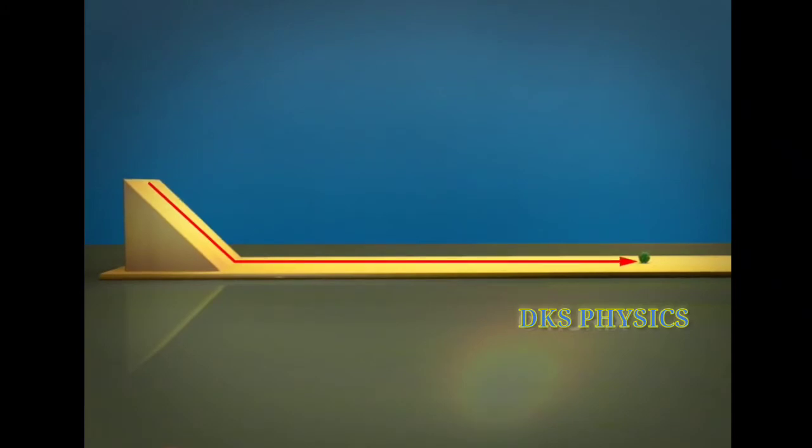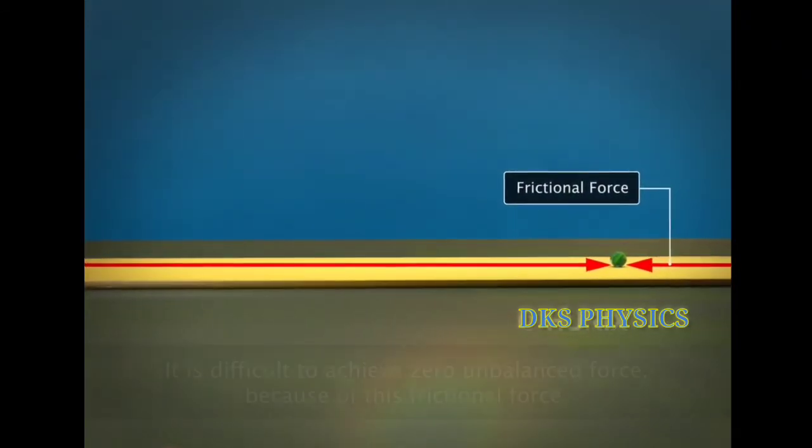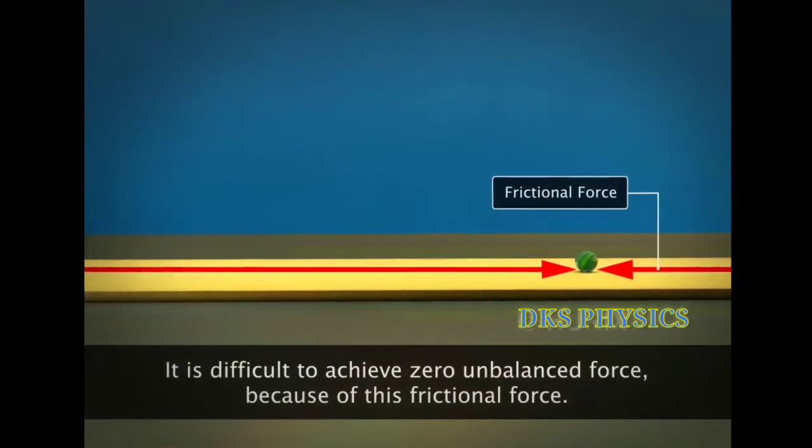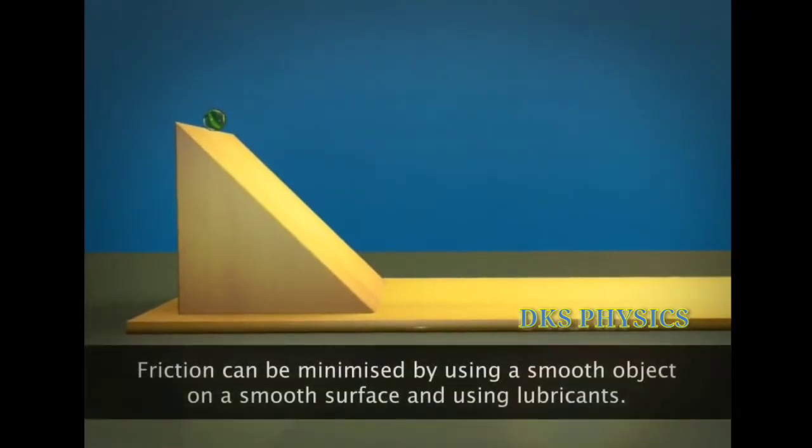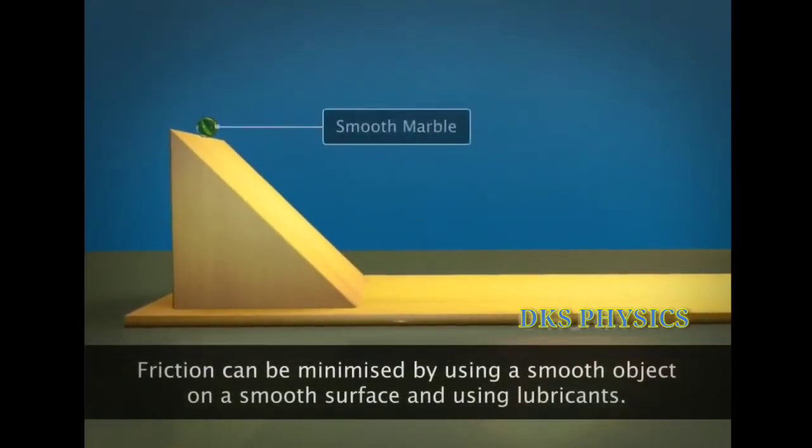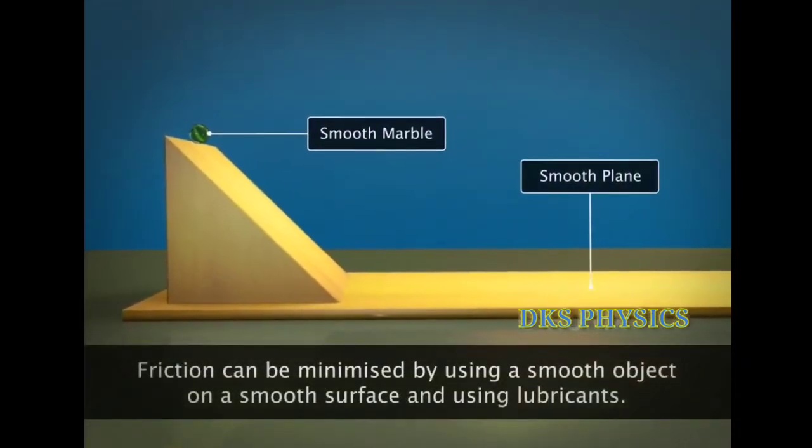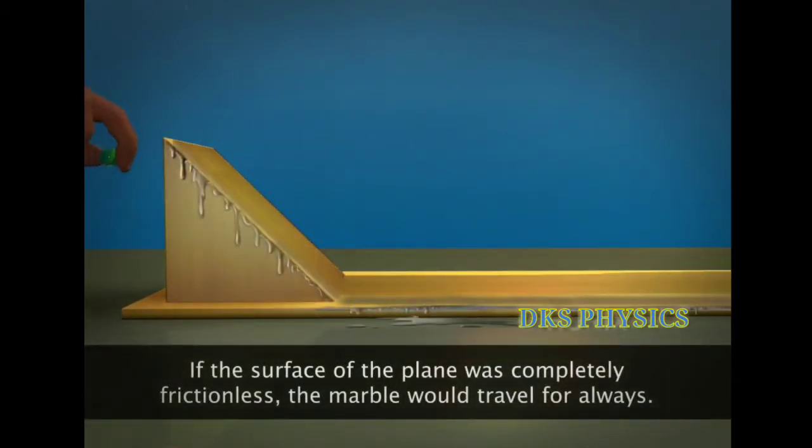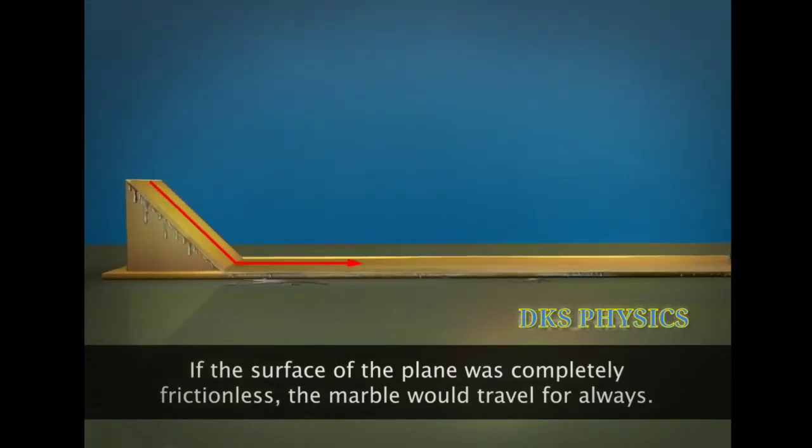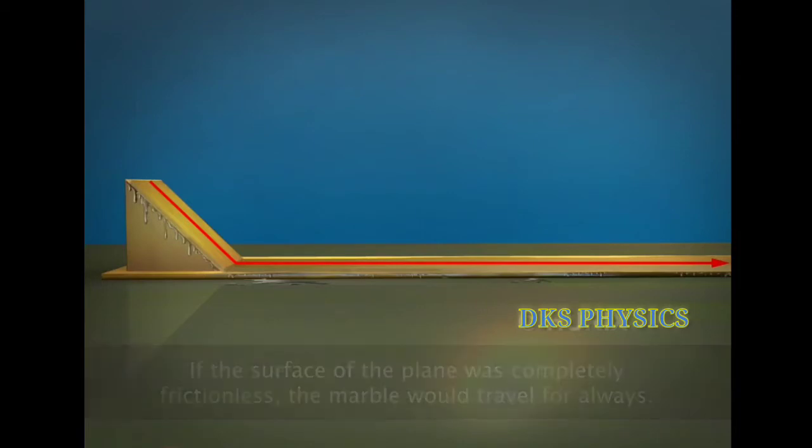It travels quite a distance. The marble stops eventually because of the frictional force opposing its motion. In practical situations, it is difficult to achieve zero unbalanced force because of frictional force. However, friction can be minimized by using a smooth marble on a smooth surface and using lubricants. If the surface of the plane is completely frictionless, the marble will travel forever, trying to reach its original height.